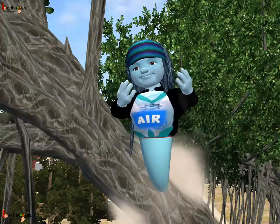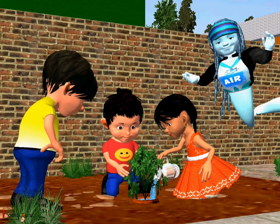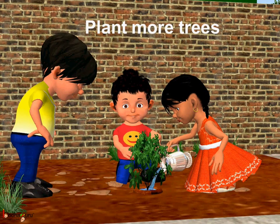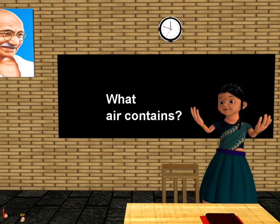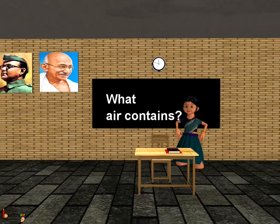Great job! Why was the windman happy when the children were planting new plants? This was because plants make the air fresh and clean. Hence we should plant more trees. Also we should not cut trees unnecessarily. So now you know a lot about air and why it is important for us. That's all for now. Bye bye children!